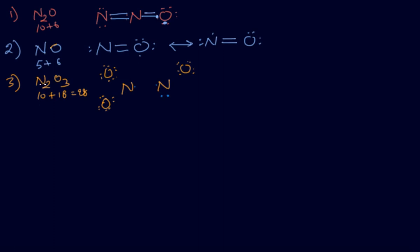Now for N2O3: nitrogen has 5 electrons in its valence shell, so two nitrogens give 10; three oxygens give 18; total is 28 electrons. Draw the skeleton, then give 8 electrons to each oxygen: 8, 16, 24, then 25, 26, 27, 28. Now make the bonds — one bond takes two electrons, another bond takes two electrons, and so on. Nitrogen ends up with two, four, six, eight, and oxygen with two, four, six, eight each.